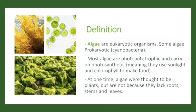What is chlorophyll? Chlorophyll is a pigment present in all green plants which helps in preparing their food by using sunlight. At one time, algae were thought to be plants, but they are not, because they lack roots, stems, and leaves.